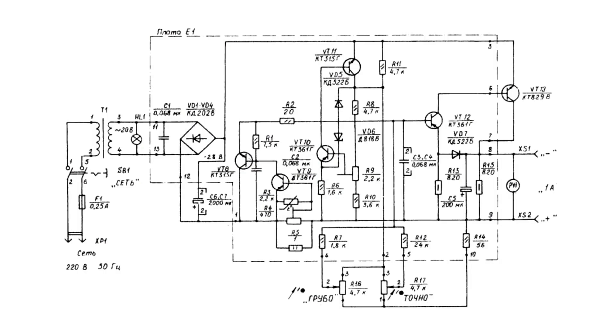The original circuit is designed for an output voltage from 0 to 15 volts and a current up to 1.2 amperes. And believe me, this will be enough for most tasks.